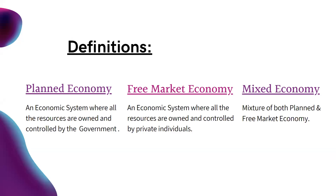Starting off with the basic definitions — planned economy. A planned economy is an economic system where all the resources are owned and controlled by the government. The government is solely in charge and is producing and selling all the goods and services itself. There is no private intervention. Planned economy has government-based objectives, and the government's major objective is the well-being and welfare of the society.